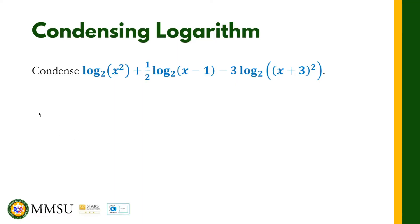Next, let us answer this problem: condense the logarithm with base 2 of x squared, plus one-half the logarithm with base 2 of x minus 1, minus 3 times the logarithm with base 2 of x plus 3 squared. The first step in condensing logarithms is to use the power rule if we have coefficients — coefficients like one-half or three — so we are going to use the power rule.